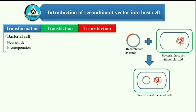Electroporation is another method of promoting competence. In this method, the cells are briefly shocked with an electric field of 10 to 20 kilovolts per centimeter, which is thought to create holes in the cell membrane through which the plasmid DNA may enter. After the electric shock, the holes are rapidly closed by the cell's membrane repair mechanisms. Uptaken DNA can either integrate with the bacteria's genome or, more commonly, exist as extra-chromosomal DNA. In plants, the DNA is often inserted using agrobacterium-mediated recombination, taking advantage of the agrobacterium's T-DNA sequence that allows natural insertion of genetic material into plant cells.